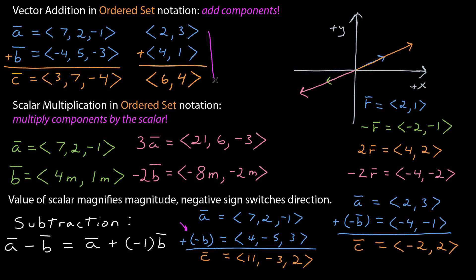And for this other one, if I subtract those two instead, a is still 2, 3. Negative b, then, is negative 4, negative 1. And if I add them together, I get negative 2 and 2.